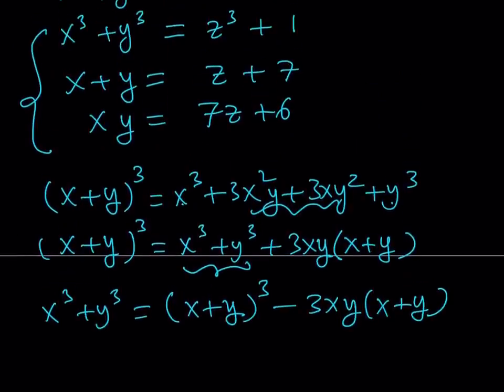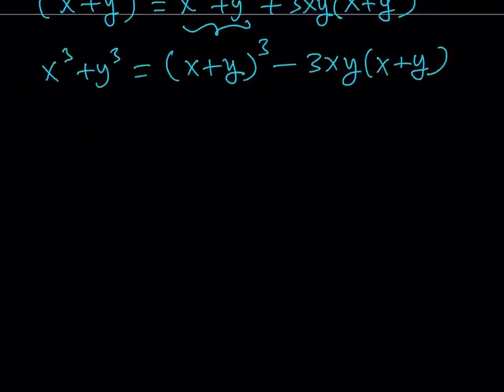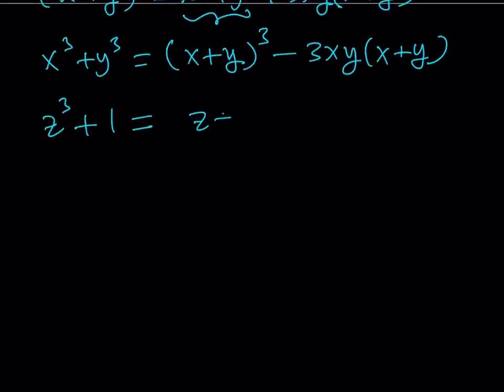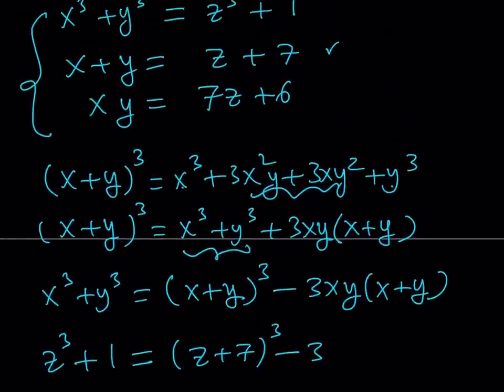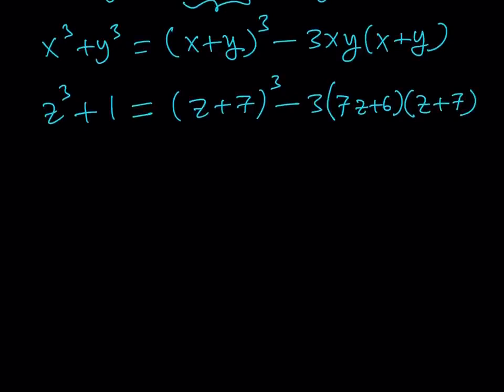So, we have the following system. Let's go ahead and substitute what x cubed plus y cubed is, which is z cubed plus 1. So, we have z cubed plus 1 on the left-hand side. On the right-hand side, I have x plus y quantity cubed, but x plus y can be written as z plus 7. So, I can write it as z plus 7 quantity cubed minus 3 times xy. And xy can be written in terms of z as well. So, I can replace it with 7z plus 6. And then, x plus y, again, can be replaced with z plus 7. Great. Now, we have this equation, which is in a single variable, which is z.